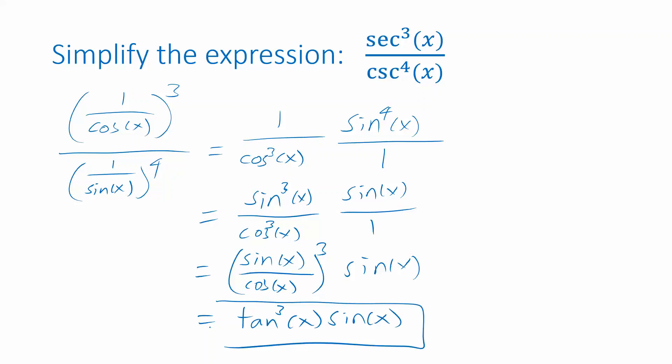Again, we'd call this a simplified form. Notice the exponents are smaller — 3 and 1 instead of 4 and 3 — and also there's no division bar, so that's one fewer symbol. Two reasons why we would tend to think of this final answer as a simplified form.